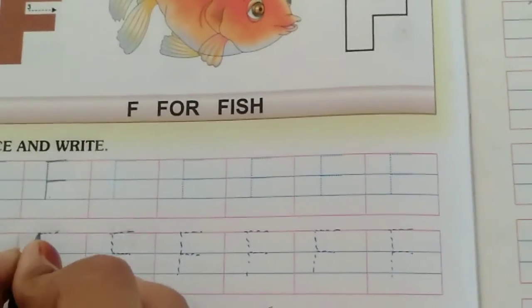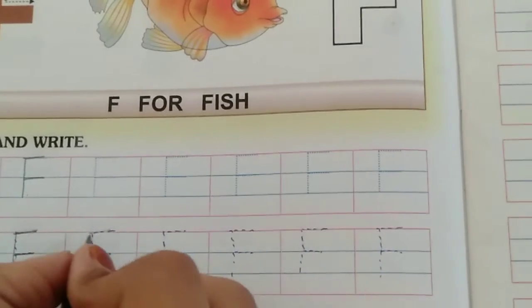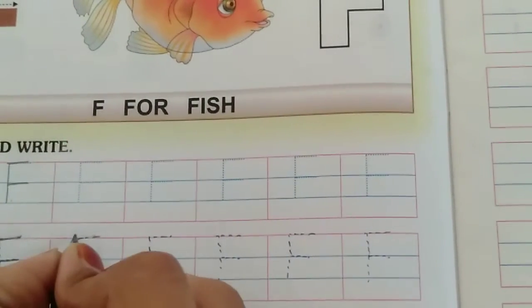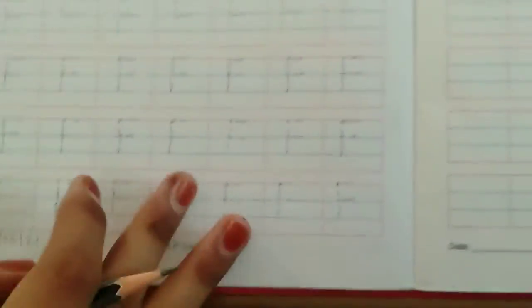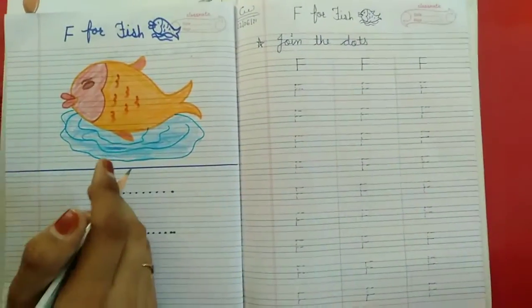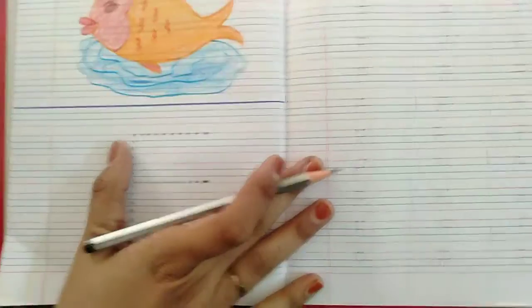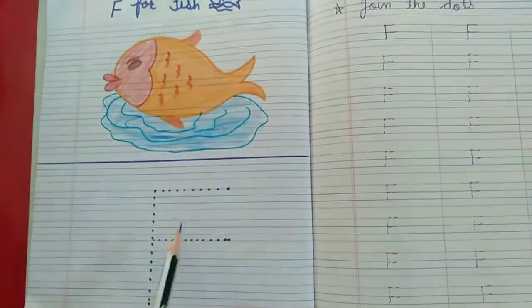Speak and write. F for fish. Page number 12 complete ho jaye. Then hum log English ki notebook mein likhenge. Parents aapko is tarah se book ready karna hai. F for fish. Classwork.